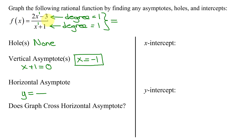The leading coefficient of the numerator: the first term is the term with the highest exponent on x, and its coefficient is 2. In the denominator, the term with the highest exponent on x is the first term, and its coefficient is 1. So the equation of the horizontal asymptote is y equals 2 divided by 1, which is 2.